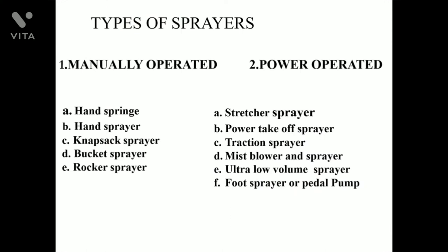Now we will see types of sprayers. Manually operated and power operated. Manually operated types are hand spring, hand sprayer, knapsack sprayer, bucket sprayer, and rocket sprayer. Power operated types are stretcher sprayer, power takeoff sprayer, traction sprayer, mist blower and sprayer, ultra low volume sprayer, and foot sprayer or pedal pump.